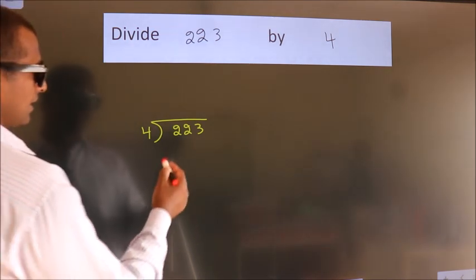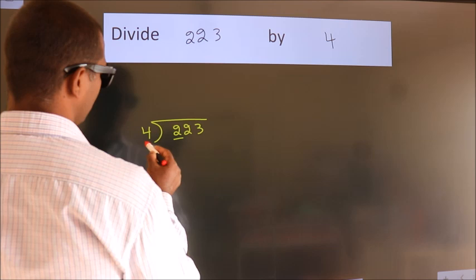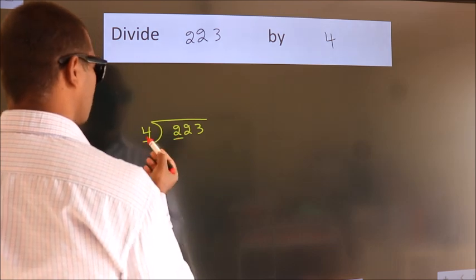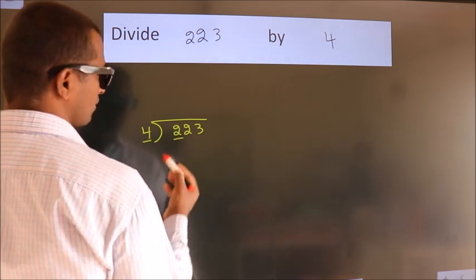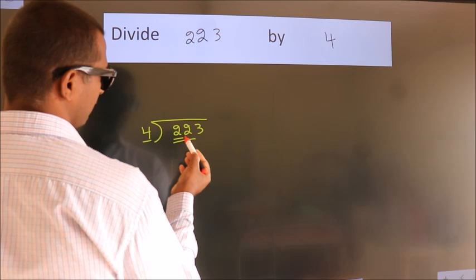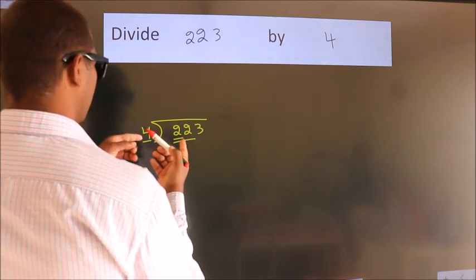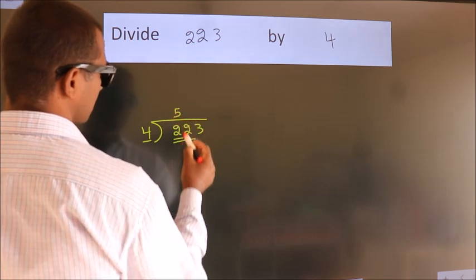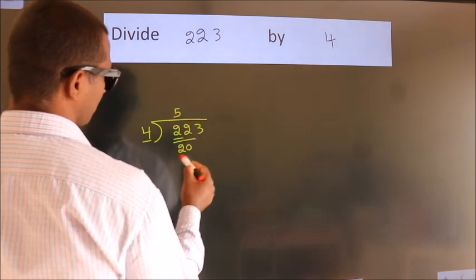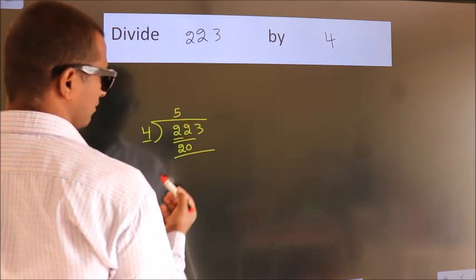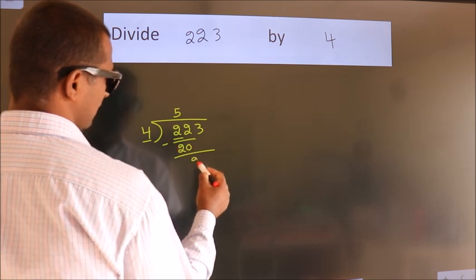Next, here we have 2, here 4. 2 is smaller than 4, so we should take 2 numbers: 22. A number close to 22 in the fourth table is 4 fives, 20. Now we subtract and get 2.